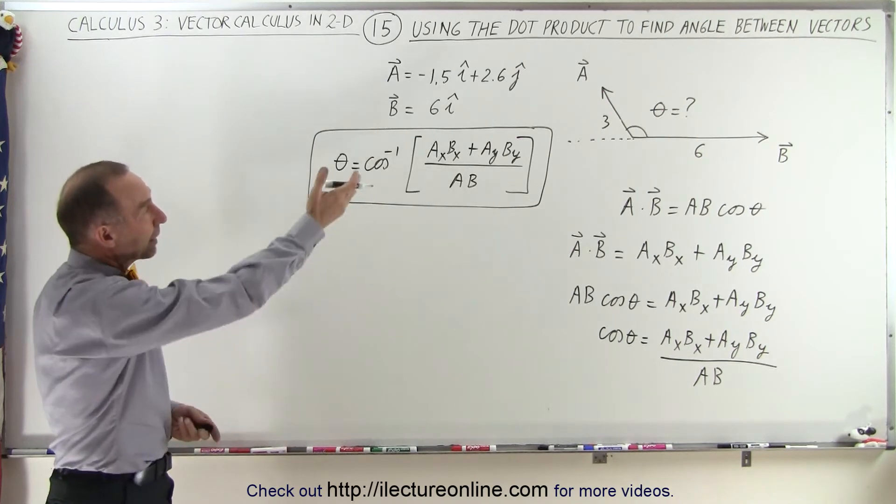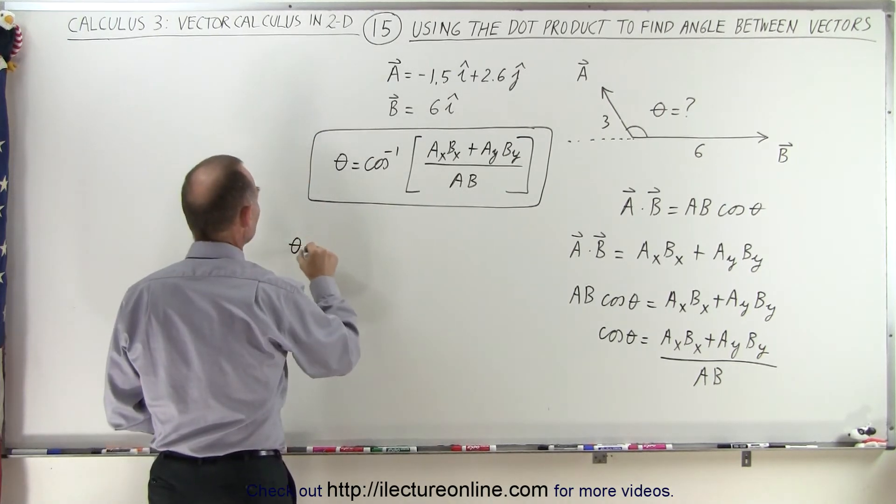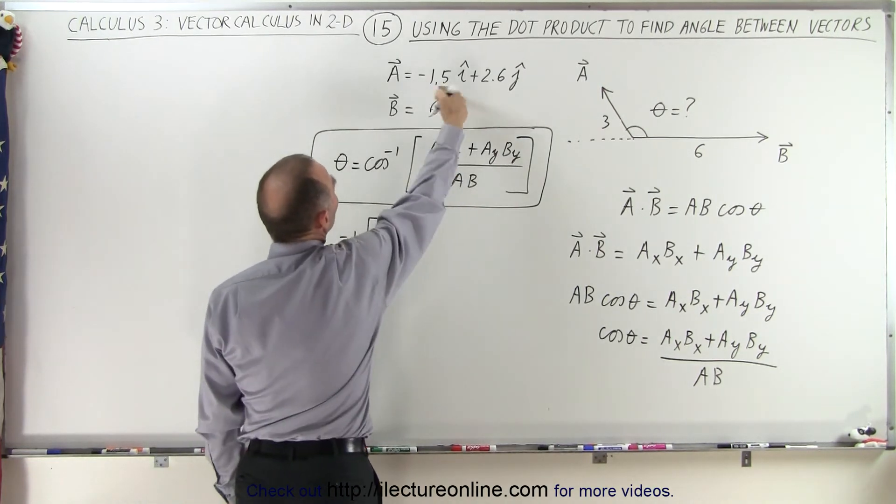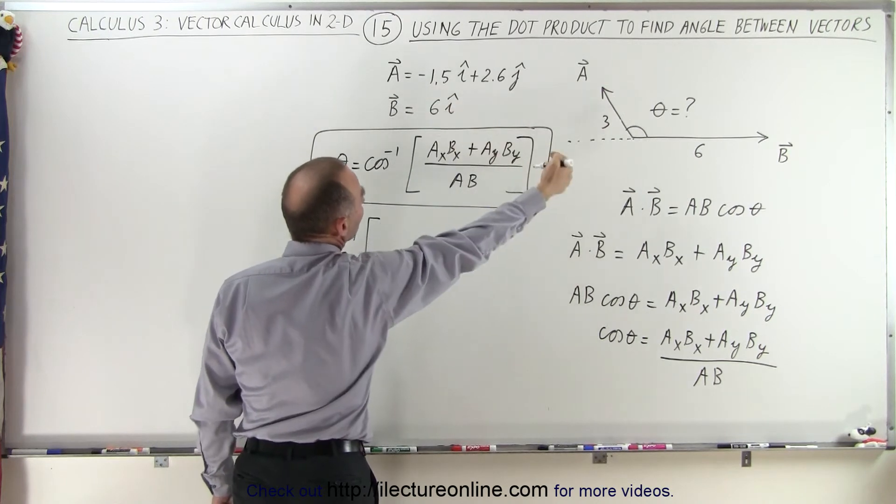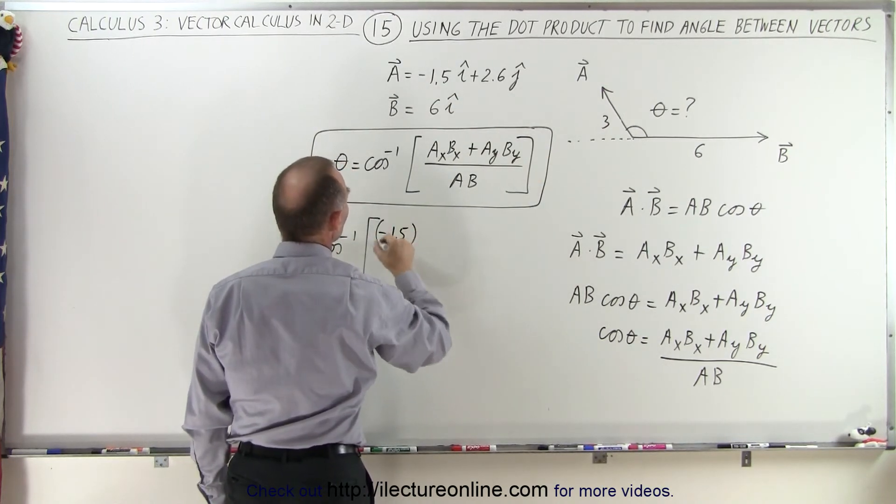All right, let's go ahead and apply that to our example that we used on the last video. We can say that theta is equal to the inverse cosine of A_x. Notice that it's pointing in the negative direction, the X component of A, so we put a minus 1.5 times